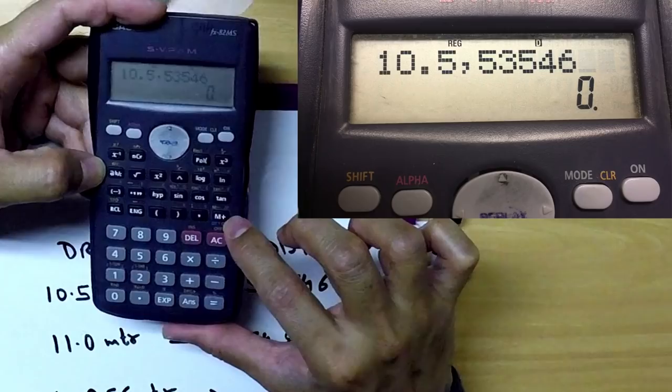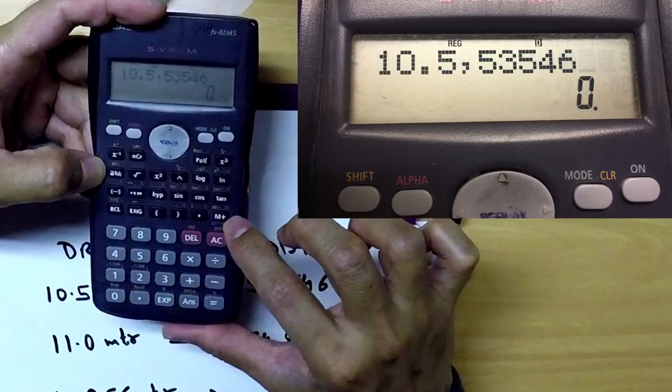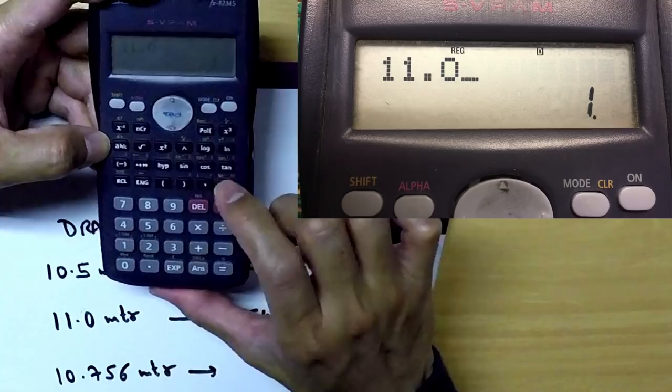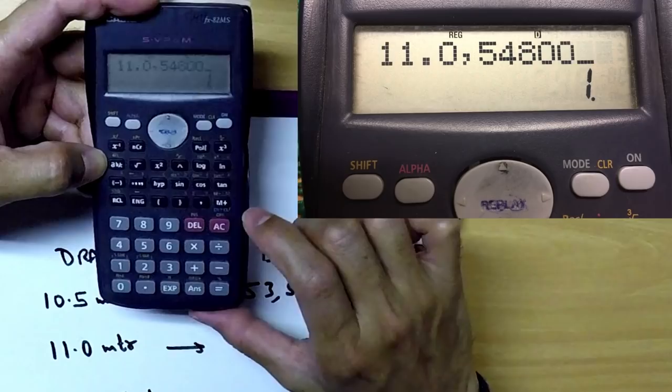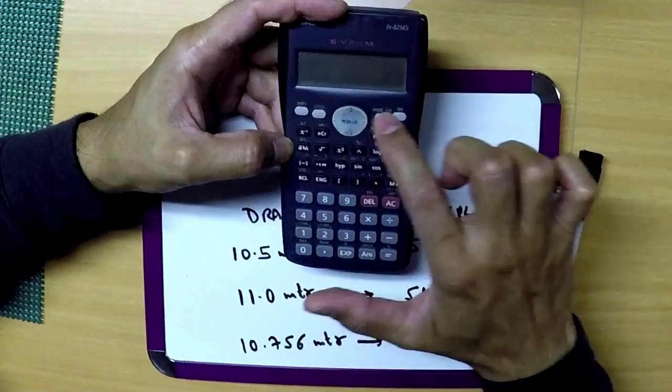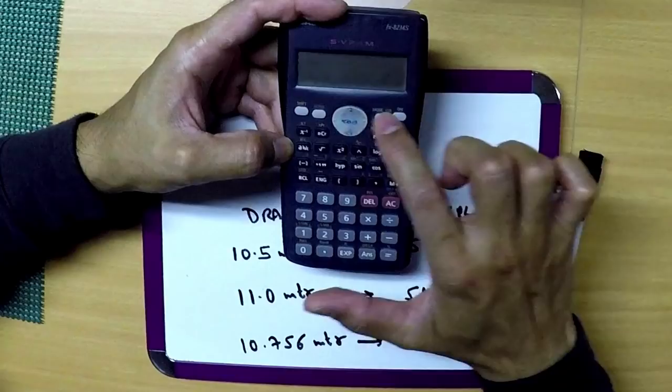Next step is 11.0, comma, corresponds to 5-4-8-0-0. Again press this memory plus button. N equals 2, so two figures are saved in memory now.